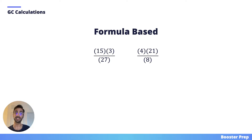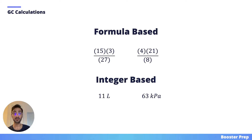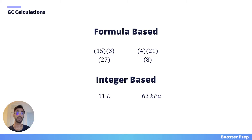Now the second way answer options of calculation-based questions can be presented is integer-based. This is when you actually have to do some math to arrive at a final value. But don't worry — whenever these types of questions come along, the values are generally easy to work with. They aren't going to give you dirty numbers as I like to call them, such as 37 or 3.8.